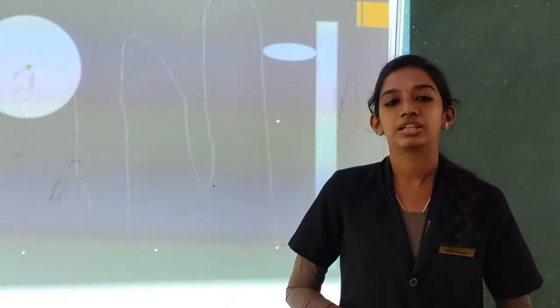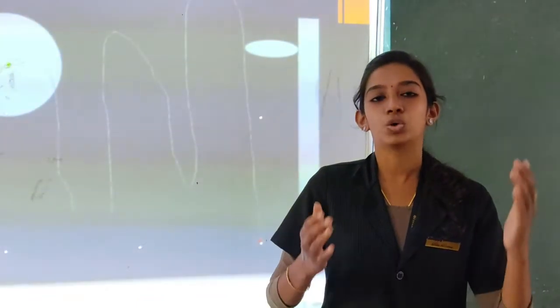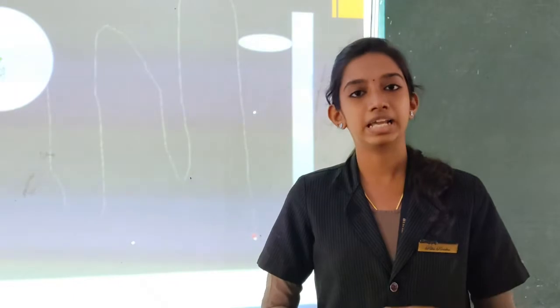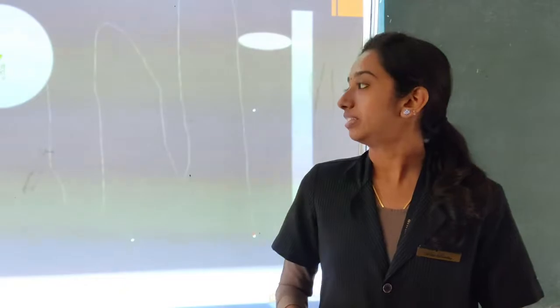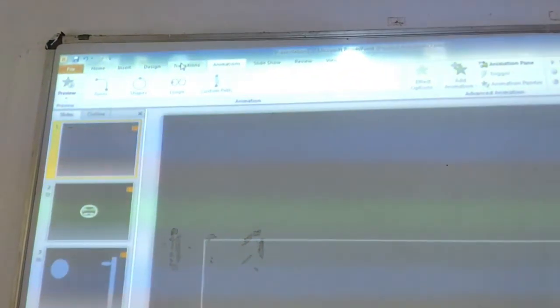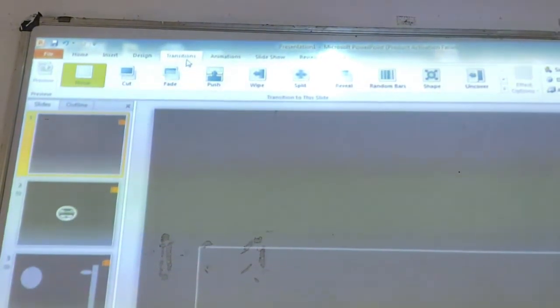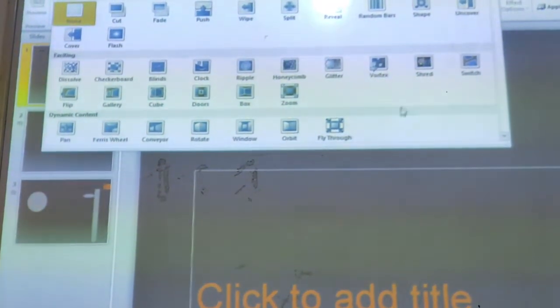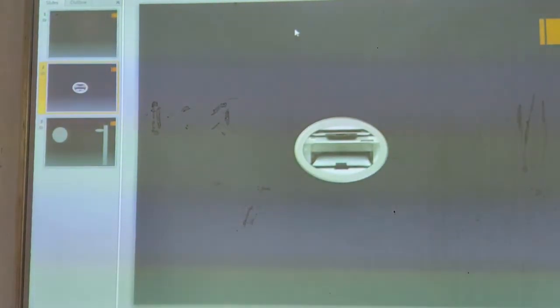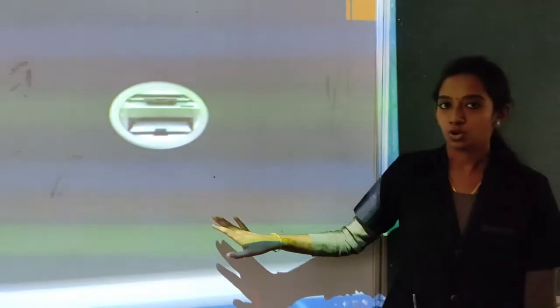So now we are going to see about Transition. Transition is also used for highlighting the slides with different effects. Let's see how to apply transition — here you can see the Transition option, click on it. There are different options. Select one and you can see the change. You can give another transition to the second slide as well.